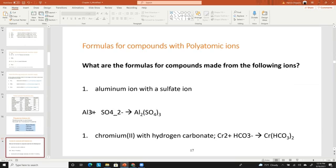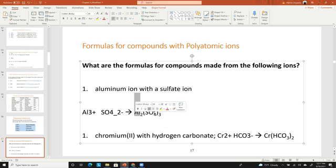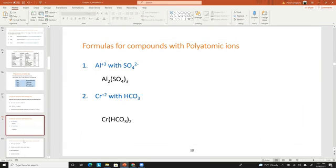Al2(SO4)3 would be aluminum sulfate since SO4 is sulfate, Al is aluminum, and you need to balance out the charges by doing your least common denominator or least common multiple of the charges.